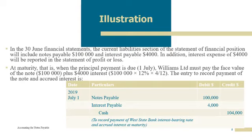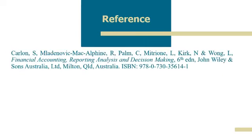At maturity on 1st July, Williams Limited will need to pay the face value of the note, which is $100,000, plus the interest accrued on 30th June 2019. So the journal entry will be debit notes payable $100,000, interest payable $4,000, and credit cash $104,000.